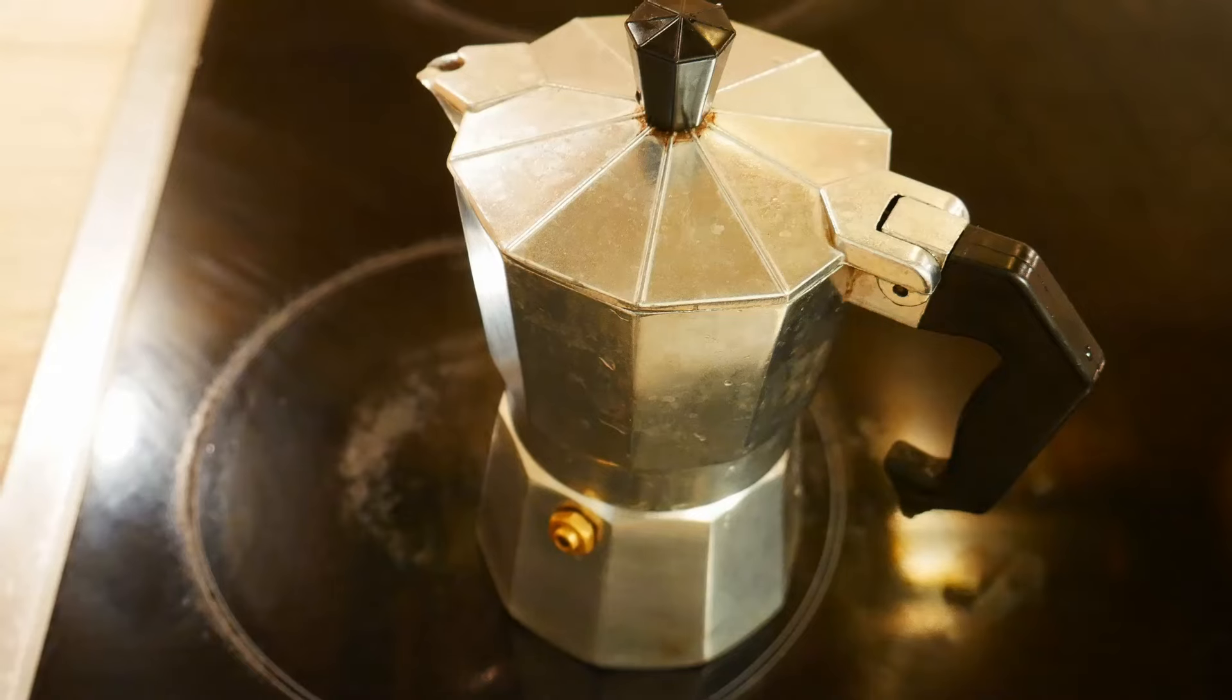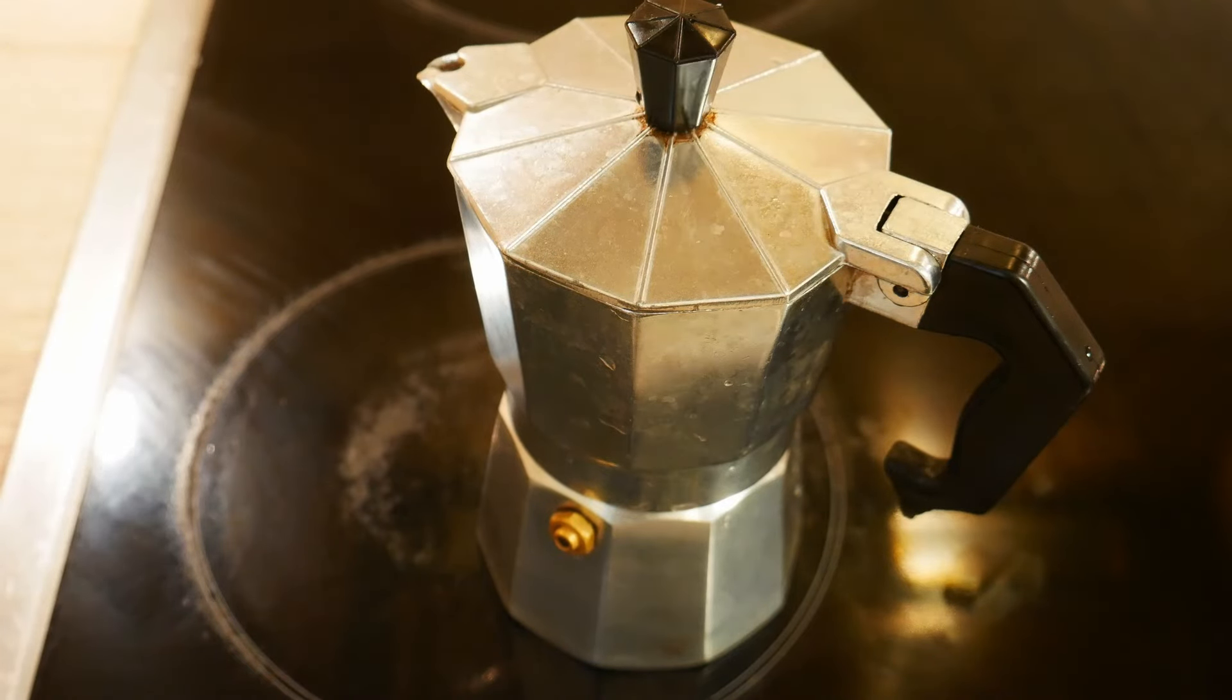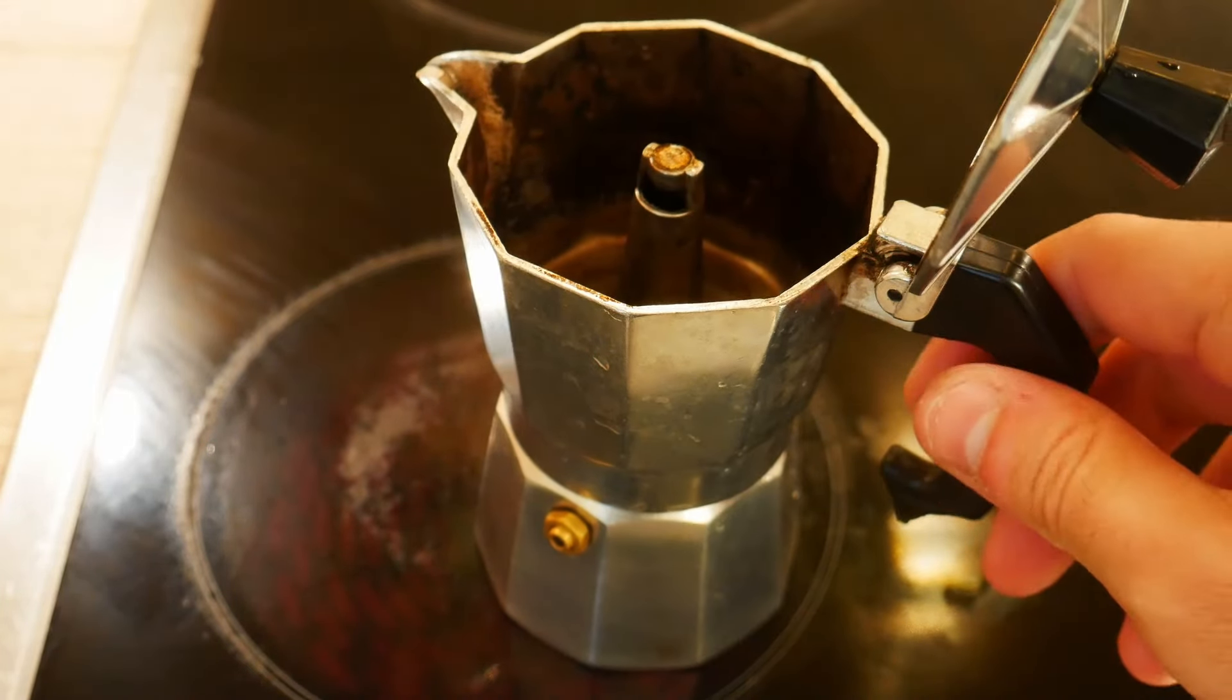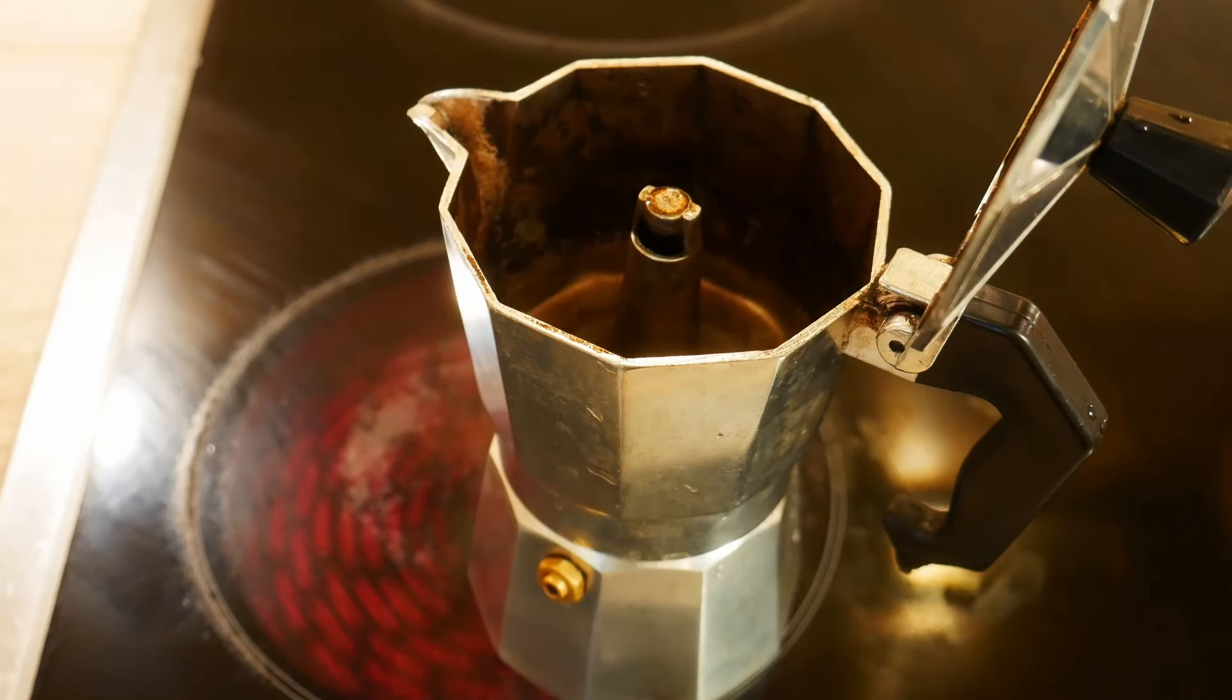On the stove at level 7 of the fire. And we keep it open. In this way we will see when the coffee starts to come out.